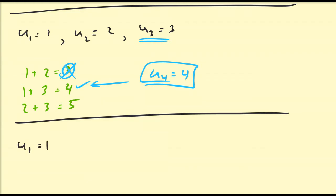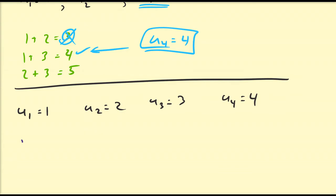So we have U1 is 1, U2 is 2, U3 is 3, U4 is 4. So what would the next value be? So we have 1 plus 2, we have 1 plus 3, 1 plus 4, 2 plus 3, 2 plus 4, and 3 plus 4 is all possible sums to consider.